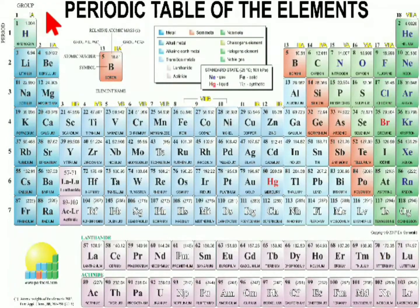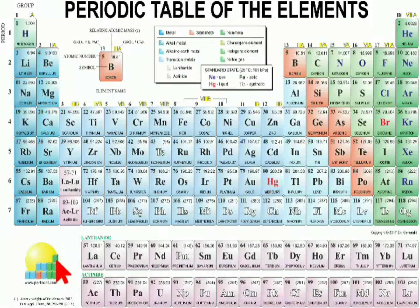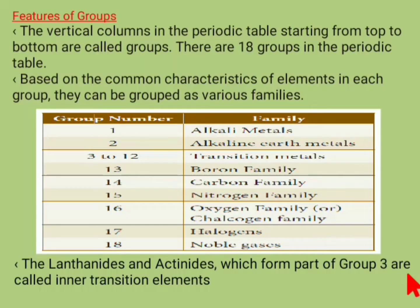What are periods? The horizontal rows are called periods. There are 7 periods in the modern periodic table. What are groups? The vertical columns starting from top to bottom are called groups. There are 18 groups in the modern periodic table. What are inner transition elements? The lanthanides and actinides are called inner transition elements.